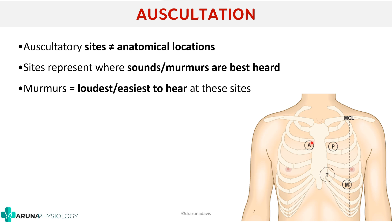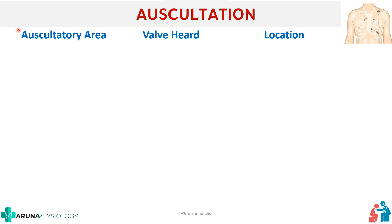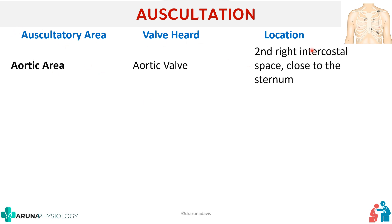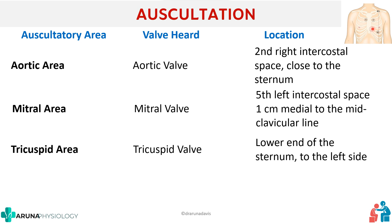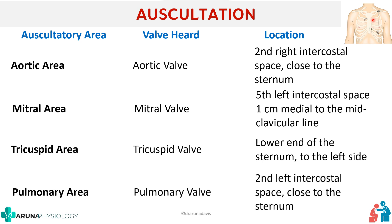The aortic area is at the second right intercostal space close to the sternum, where aortic valve sounds are best heard. The mitral area is at the fifth left intercostal space, one centimeter medial to the mid-clavicular line — which corresponds to the normal apex beat location. The tricuspid area is at the lower end of the sternum to the left side. The pulmonary area is at the second left intercostal space close to the sternum.